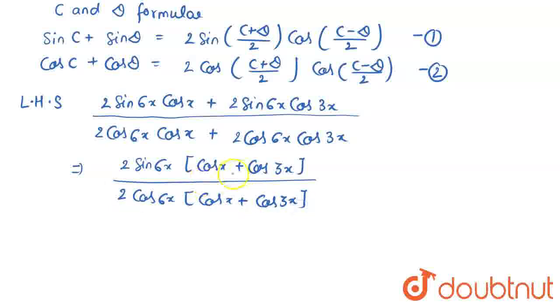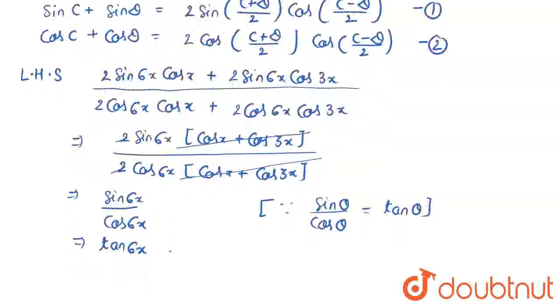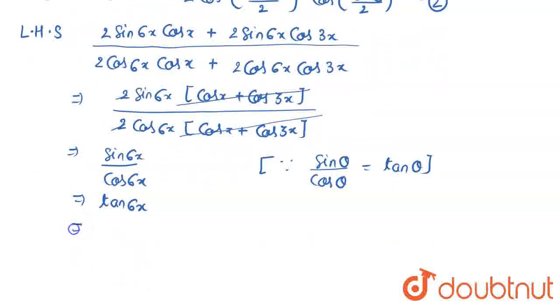Now you see that this part is common in both the numerator as well as the denominator, so I am cancelling it out. You can cancel out 2 as well. This becomes sin 6x divided by cos 6x. Since we know sin θ divided by cos θ equals tan θ, I can write it as tan 6x, which is nothing but my right hand side. Hence we have proven the given identity.